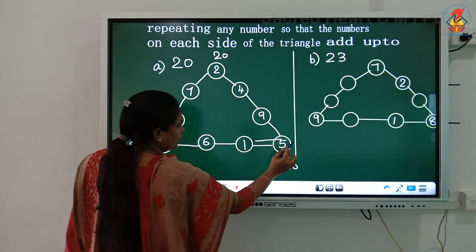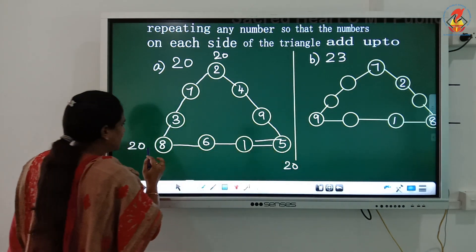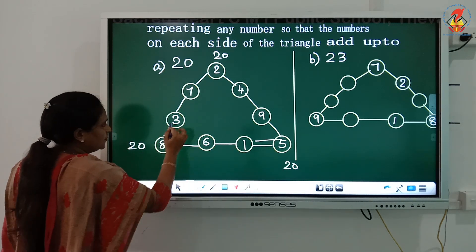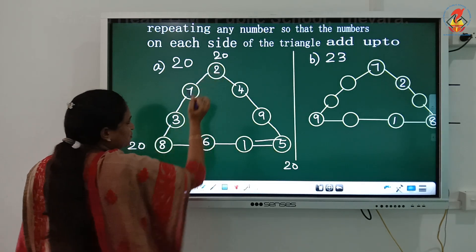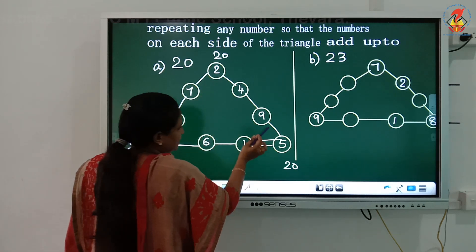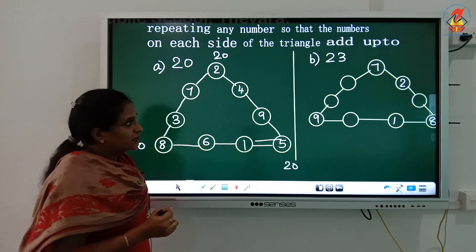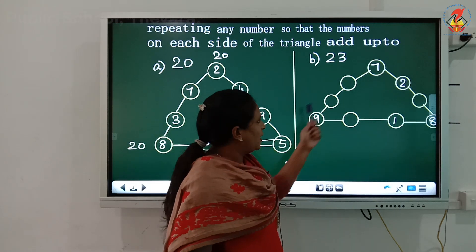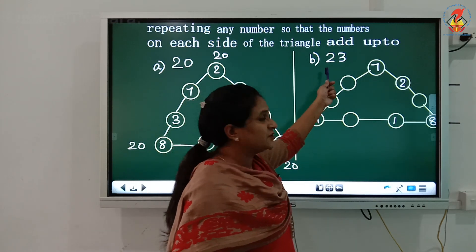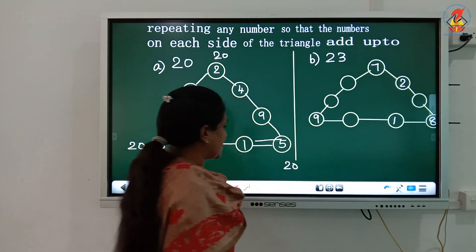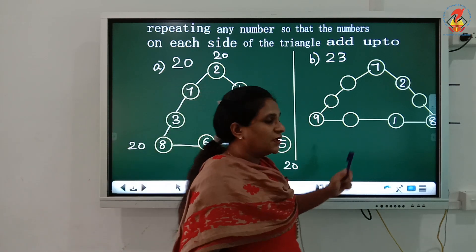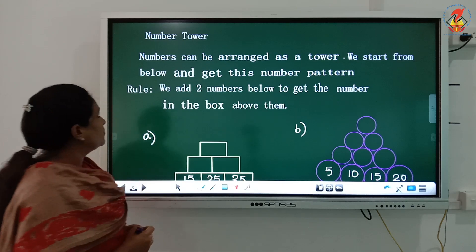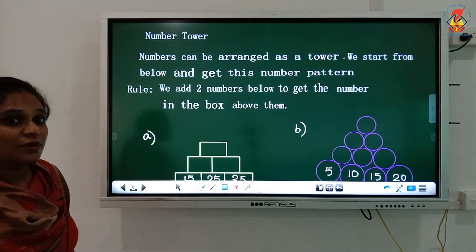Verification: 8 plus 6 plus 1 plus 5 gives 20; 8 plus 3 plus 7 plus 2 gives 20; and 2 plus 4 plus 9 plus 5 gives 20. For the next question, you have to get 23 on each side. Can you try it yourself? Now let's move on to number towers.